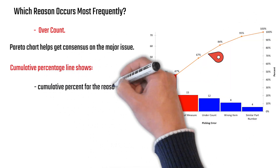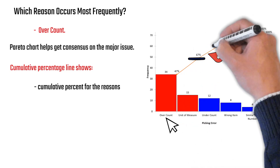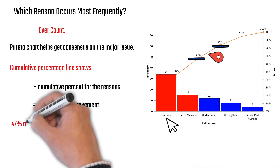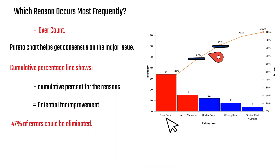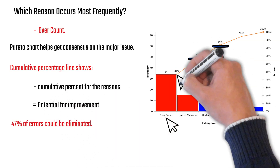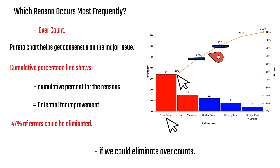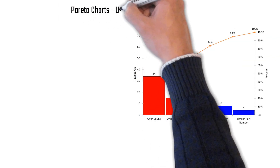From the cumulative line, over count and unit of measure together account for 67% of total picking errors. But if we focus on over count alone and eliminate it, we could eliminate almost half — 47% — of all errors.